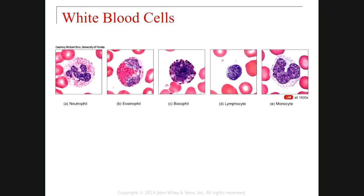These are the real pictures of the leukocytes. In the first three — the neutrophil, eosinophil, and basophil — you can see granules in the cell, and these three have polymorphonuclear nuclei with different parts. But in the fourth and fifth one, you only have one part of the nucleus, and you don't have any granules. They are agranular, and their names are lymphocytes and monocytes.